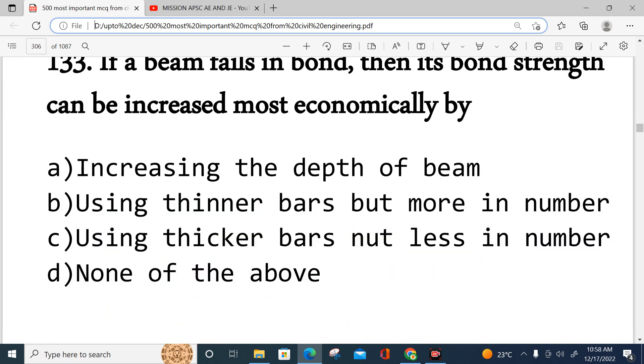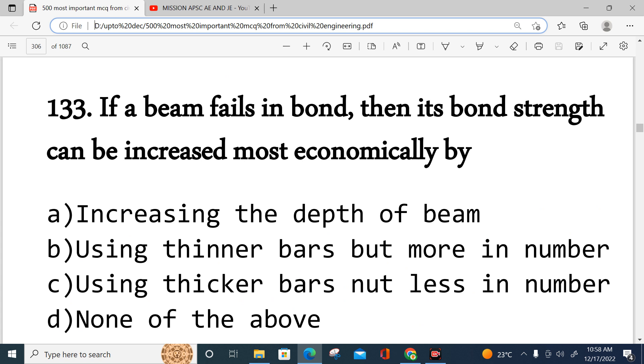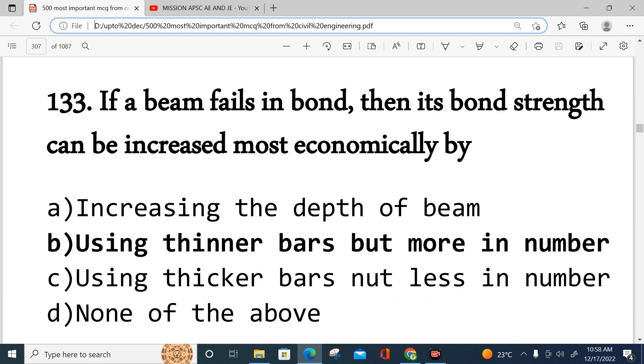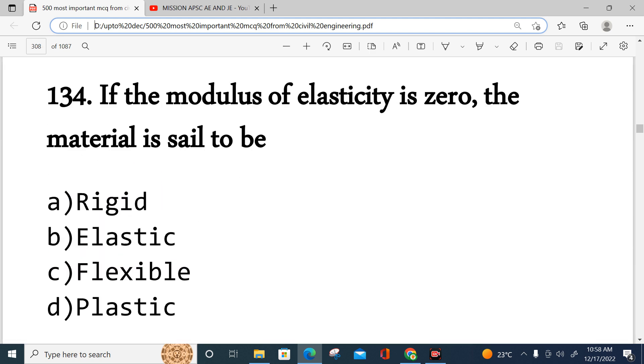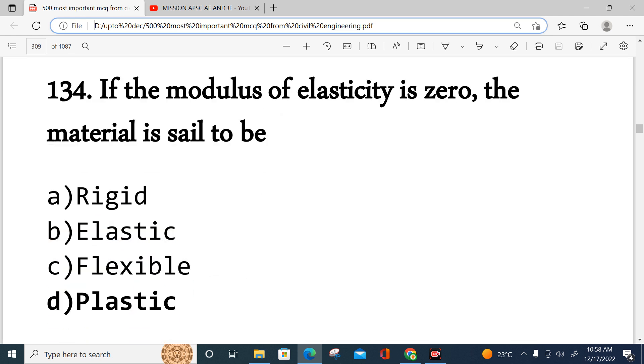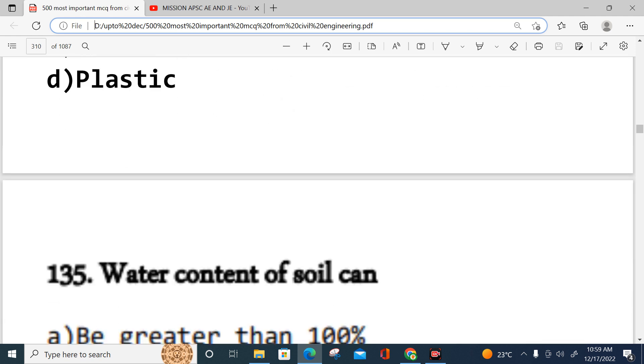Question 133: If a beam fails in bond, then its bond strength can be increased most economically by increasing the depth of the beam. This will increase the bond strength. If modulus of elasticity is zero, that means the material is plastic.